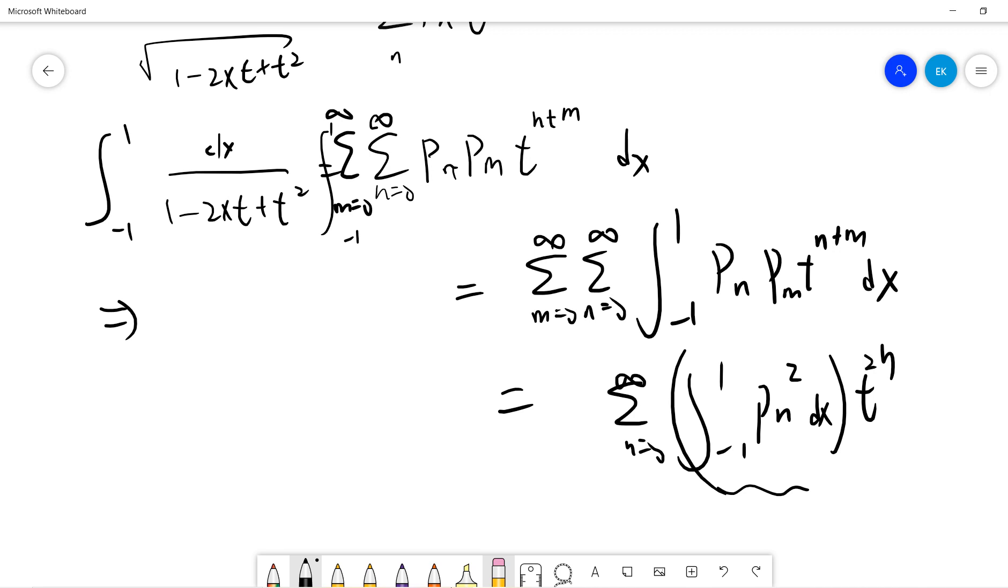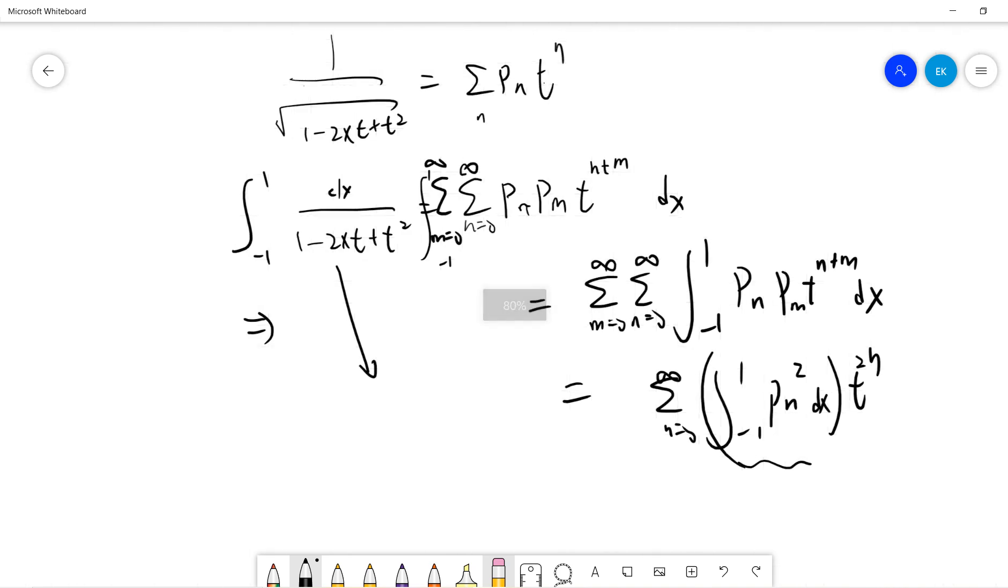Oh sorry, this is 2n. And this is the constant that we are hoping to get. So the final thing is we just do the left hand side integral.